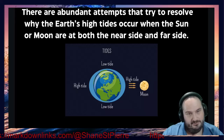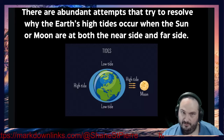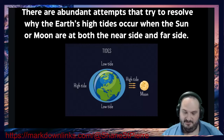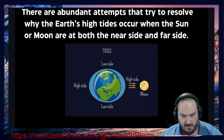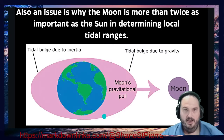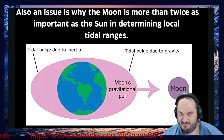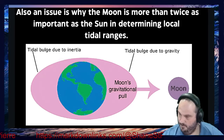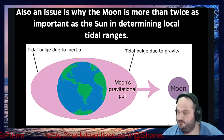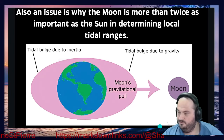He set out to solve the problem of why high tides occur when the Sun and Moon are at both the near and far side — essentially, why do we have the double diurnal semi-bulge, and how do the Sun and Moon both interact to cause that bulge as per the heliocentric model. The other issue was why the Moon was more than twice as important as the Sun in determining local tidal ranges. Of course, the Moon is 400 times bigger but 400 times further away, so it should have a proportionate gravitational force, you would think.